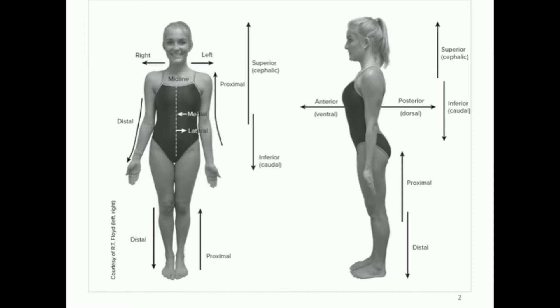Something lateral to the belly button might be the edge of the hips. We could also say the heart, which is slightly on the left side, would be more medial to the lung on that side. The lung is more lateral, the heart is more medial.